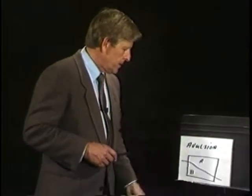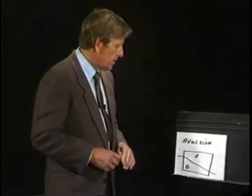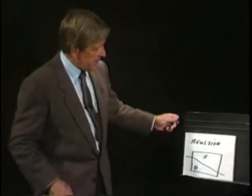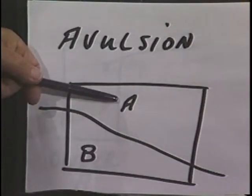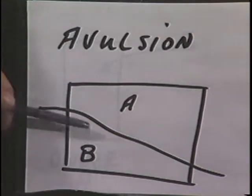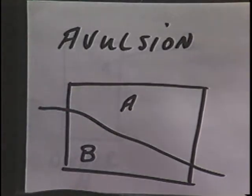Another way of acquiring is through avulsion. Now, that's a sudden movement of land. This is pretty difficult to visualize, so we use a little picture to give you an idea of what might occur here with avulsion. Let us say we have two large tracts of land — one is owned by A, one is owned by B.